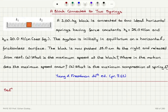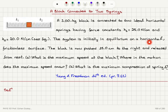A 3 kilogram block is connected to two ideal horizontal springs having force constants k1 equals 25 newtons per centimeter and k2 equals 20 newtons per centimeter. As you can see in the figure, the left spring has spring constant k1 and the right spring has spring constant k2. The system is initially in equilibrium on a horizontal frictionless surface. The block is now pushed 15 centimeters to the right and released from rest, so it's going to oscillate.